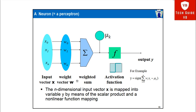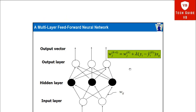A neuron or perceptron has an input vector x, to which a weight vector w is applied. It computes a weighted sum, then applies an activation function on the input and weight vectors to get the desired output y. The key components to remember are: the input vector, the weight vector, the activation function, and the output.